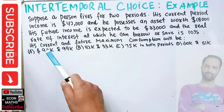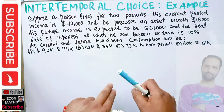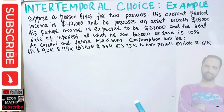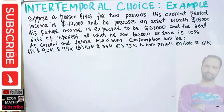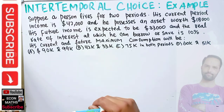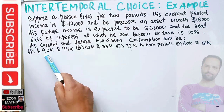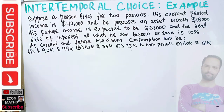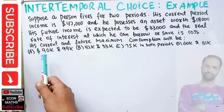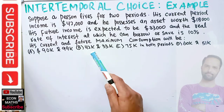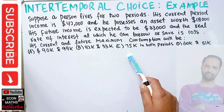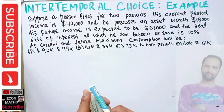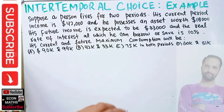We need to find out what he can consume maximum in the current period or in the future period. The options are: 90,000 and 99,000 dollars respectively in periods one and two; or 42k and 33k; or 75k in both periods; or 60k and 51k.